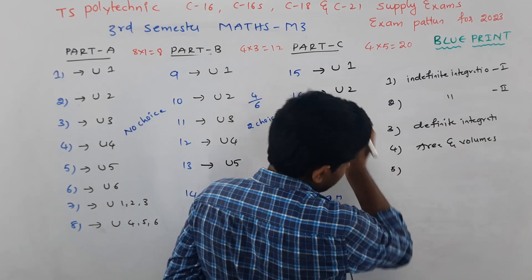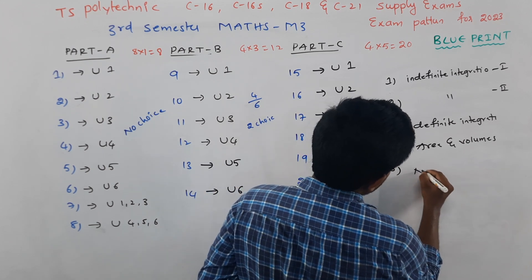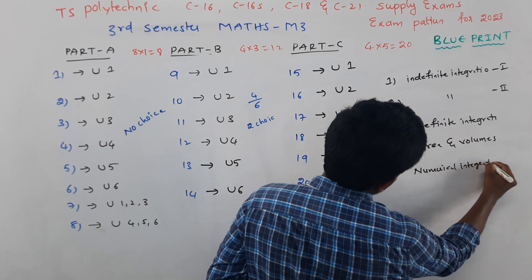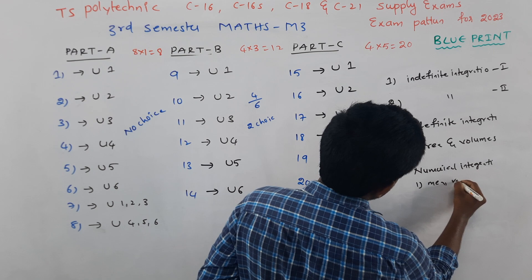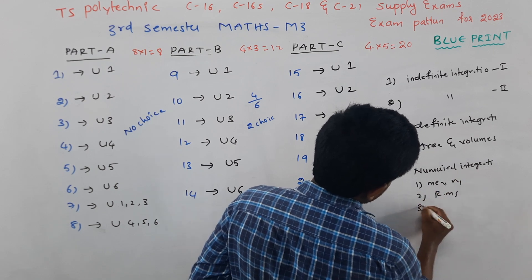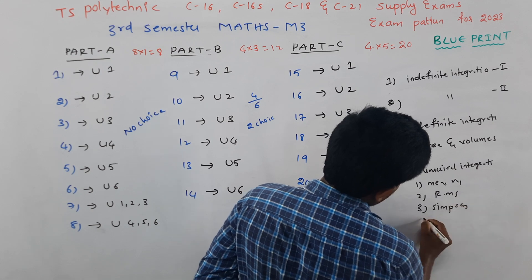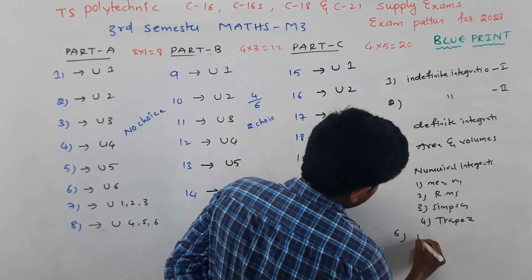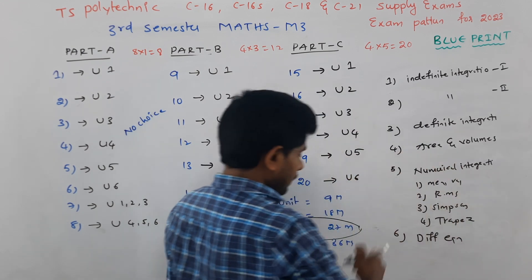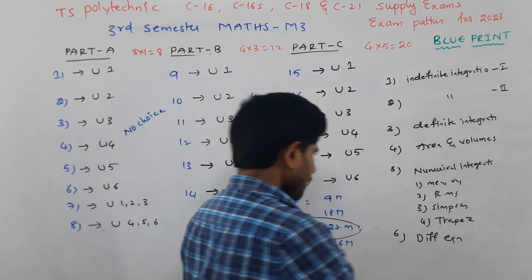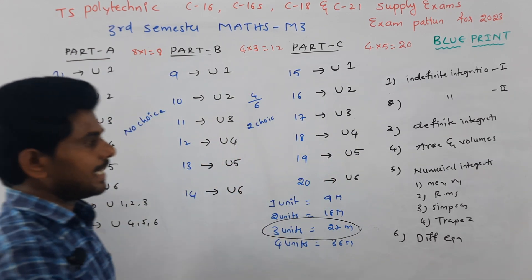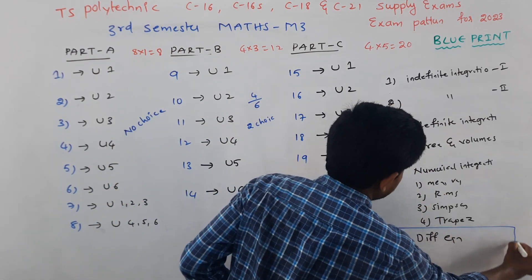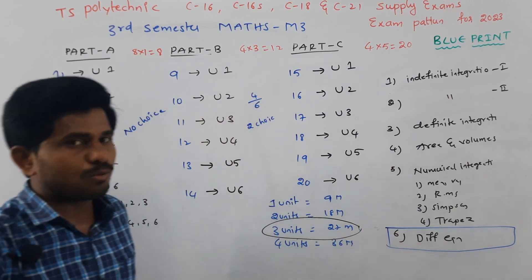Unit 5 is numerical integration, covering mean value, RMS value, Simpson's rule, and the trapezoidal rule. Unit 6 is differential equations. For SEM regular exams, units 5 and 6 are important. The course will end with unit 6, but we can use the same methods for all units.